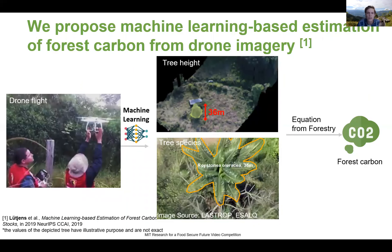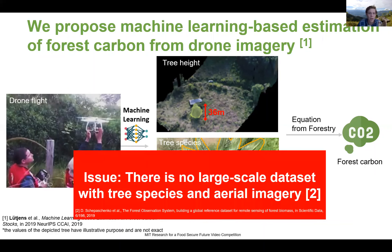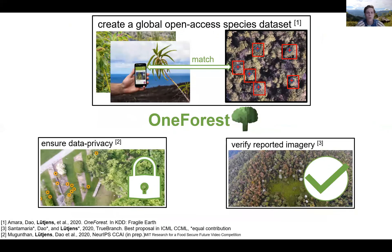What we're proposing is a machine learning-based estimation of forest carbon from drone imagery. A landowner contracts a drone owner to create a map of their forest, then uploads the imagery to MIT where we run a machine learning algorithm to extract the tree height and species, from which you can calculate the forest carbon. The main issue is that there exists no global dataset to train or benchmark the algorithms, so we're creating one — a global open-access species dataset. We've also created machine learning algorithms that ensure data privacy of the landowner and verify the integrity of the reported imagery, which received a best proposal award at a major AI conference.